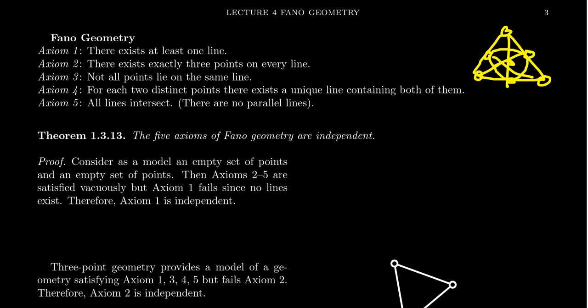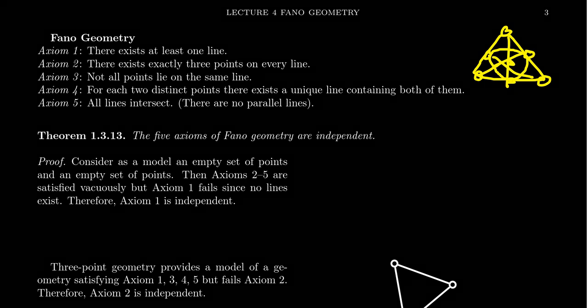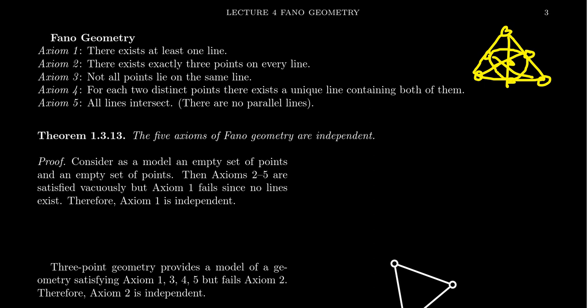What I want to prove in this lecture is that the theory is not just consistent — that's easy because we have a model — and complete because we proved this is the only model. But I also want to show that the axioms we have for Fano geometry are independent. That is, none of these axioms is a theorem of the others.